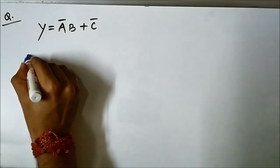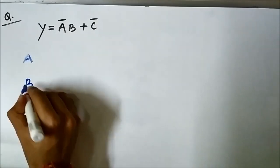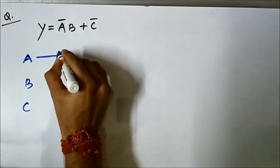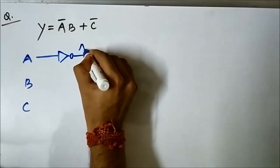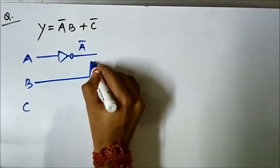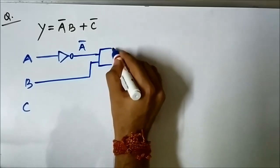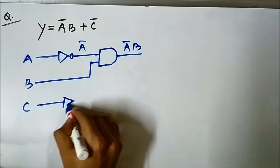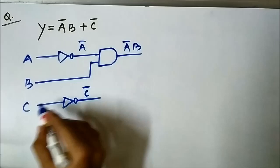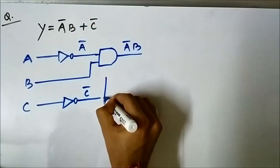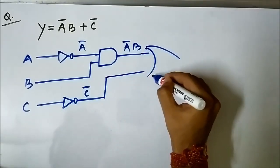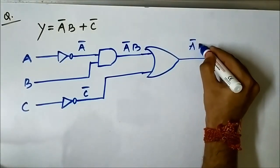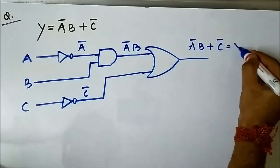First we assign the signals A, B, C. We pass A through an inverter to get Ā, then pass Ā and B through an AND gate to get ĀB. We pass C through a NOT gate to get C̄. Then the OR operation between ĀB and C̄ goes through an OR gate, and finally we get ĀB + C̄ as the output.